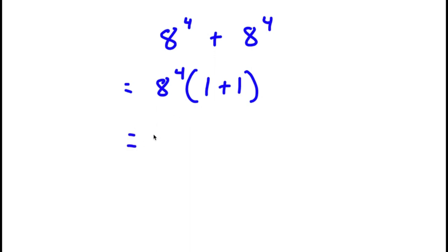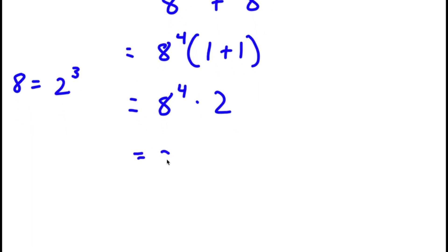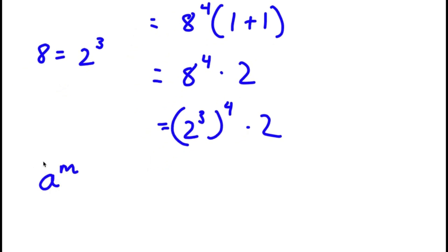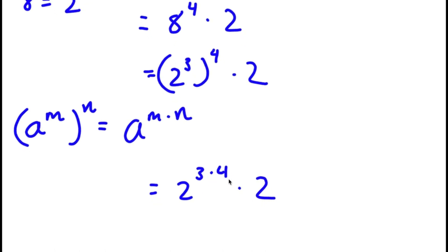Simplifying inside the parentheses, I get 8 to the power of 4 times 2, since 1 plus 1 is 2. Now 8 is the same thing as 2 to the power of 3. So replacing 8 with 2 to the power of 3, I get 2 to the power of 3 to the power of 4 times 2. Using the rule a to the power of m to the power of n equals a to the power of m times n, I get 2 to the power of 3 times 4, and 3 times 4 is 12.